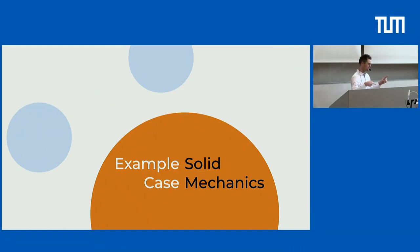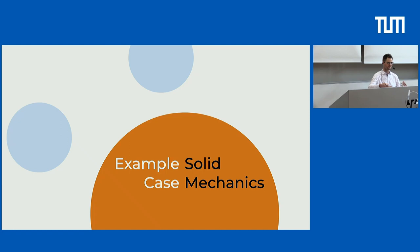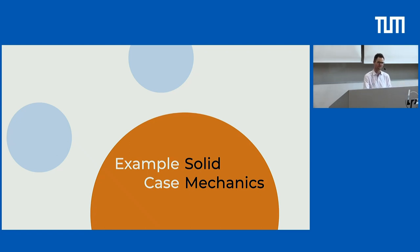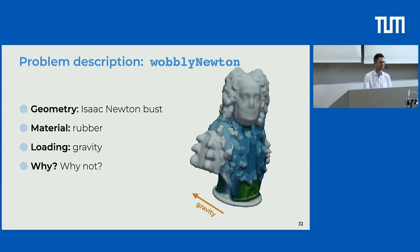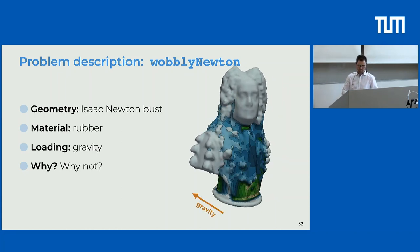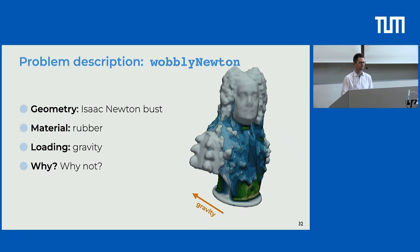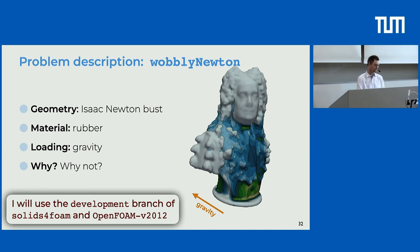An example solid mechanics case: I'll look at some cases, starting with a pure solids4foam solid mechanics case. At the OpenFOAM workshop this year in Cambridge, I wanted to run a model of something related to Cambridge. Isaac Newton is an alumnus of Cambridge, so I found a bust on GrabCAD and created a solid mechanics simulation — set the properties to a low-stiffness rubber, turned on gravity in the wrong direction, and it wobbles around. This tutorial is included, so you can try it out.